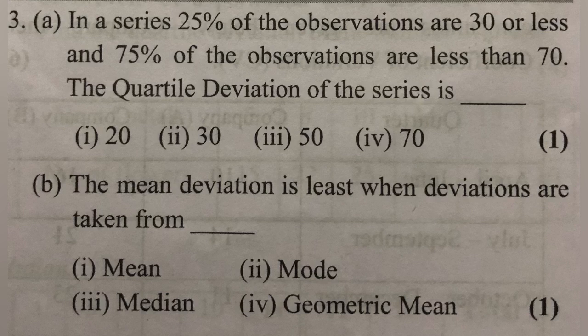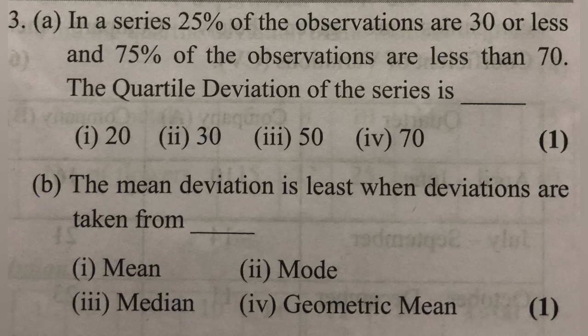The mean deviation is least when deviations are taken from the median. Mean deviation can be calculated about the mean, about the median, or about the mode. The answer is that mean deviation is minimum when taken about the median.